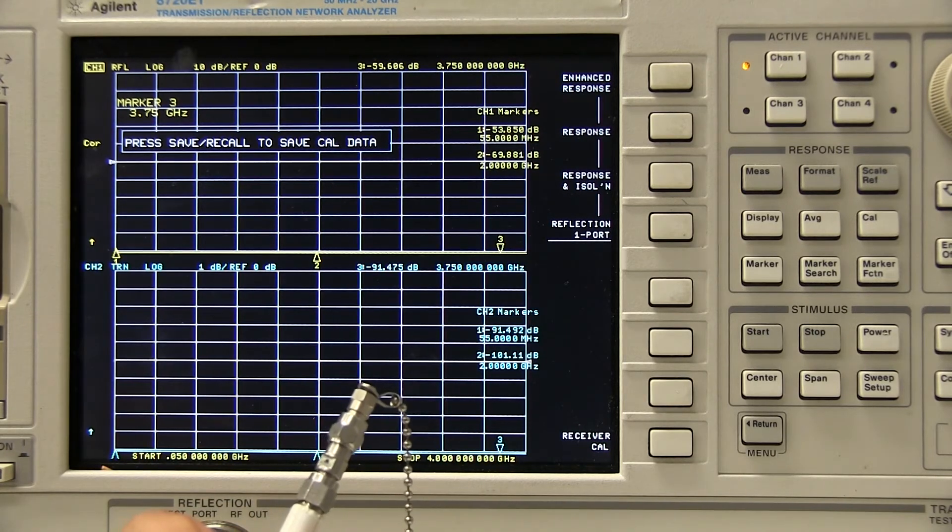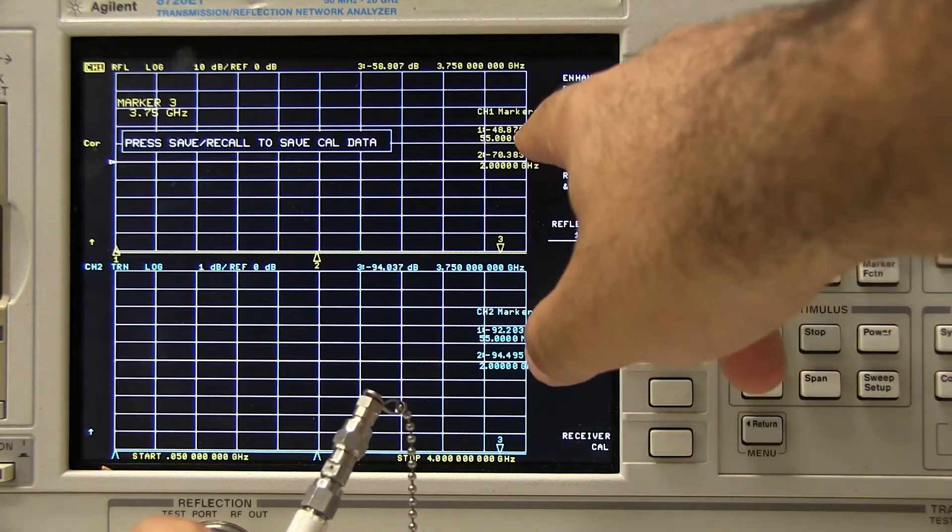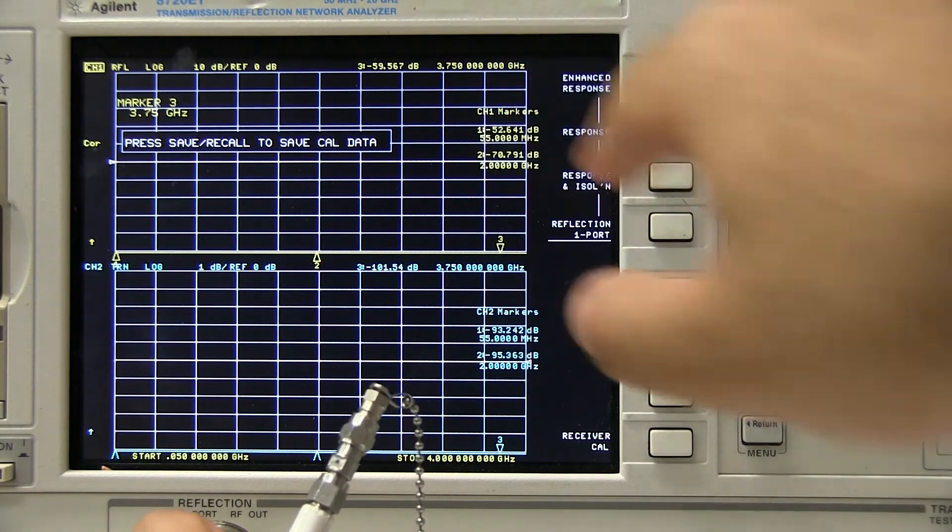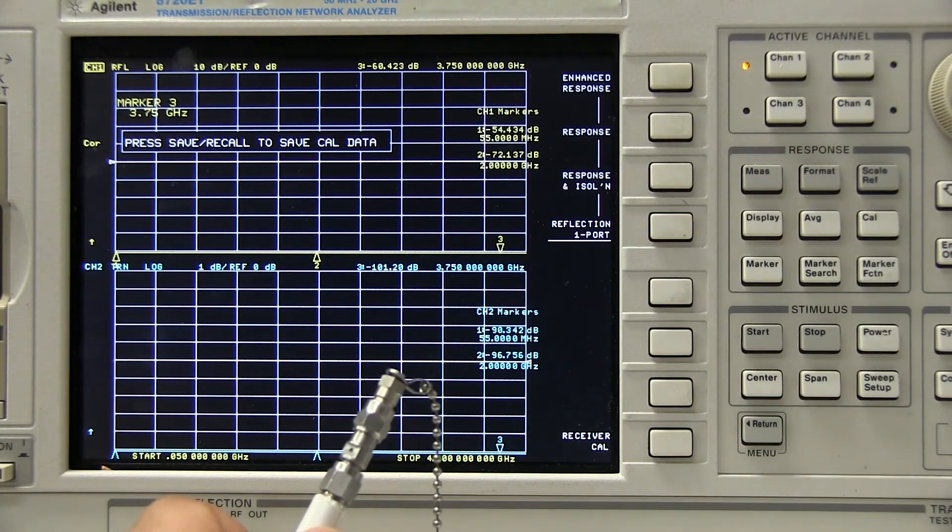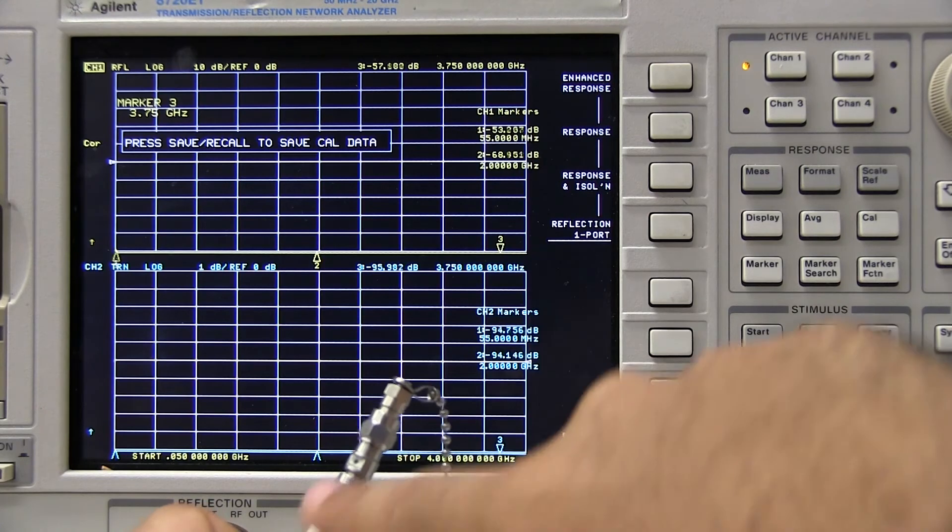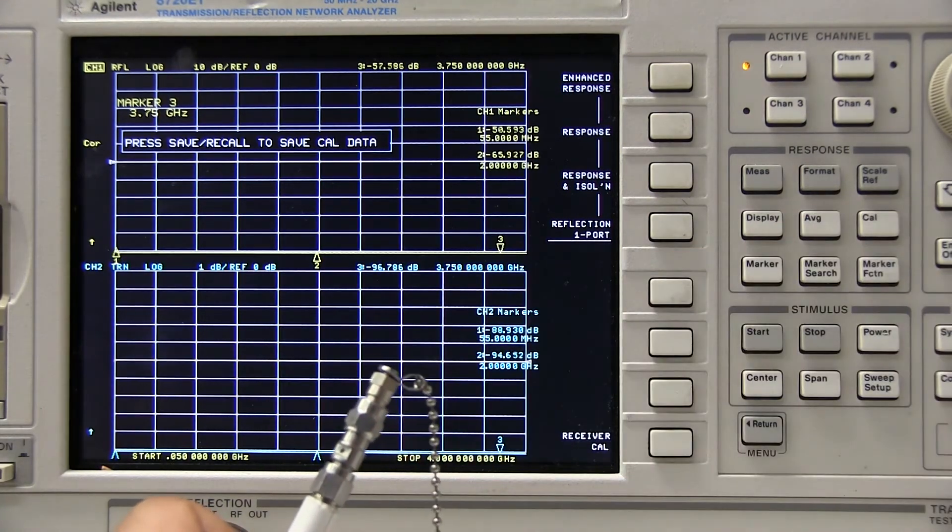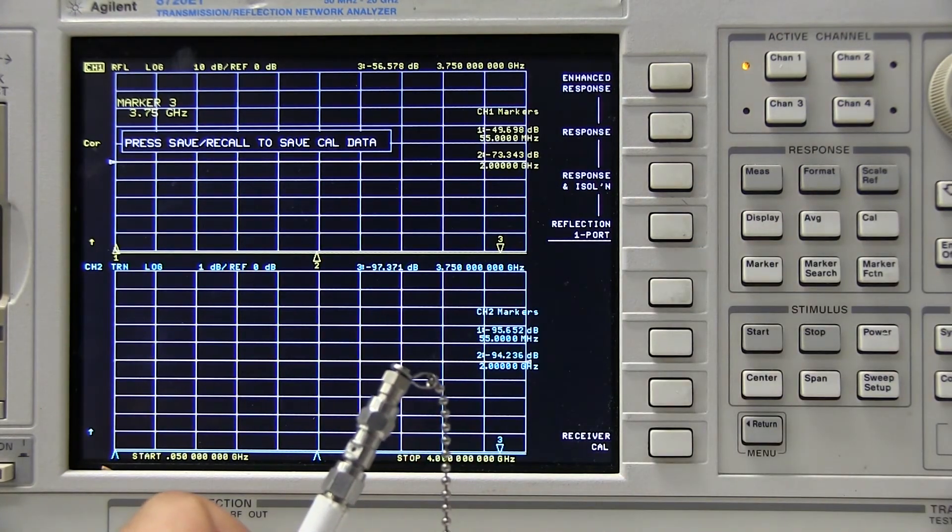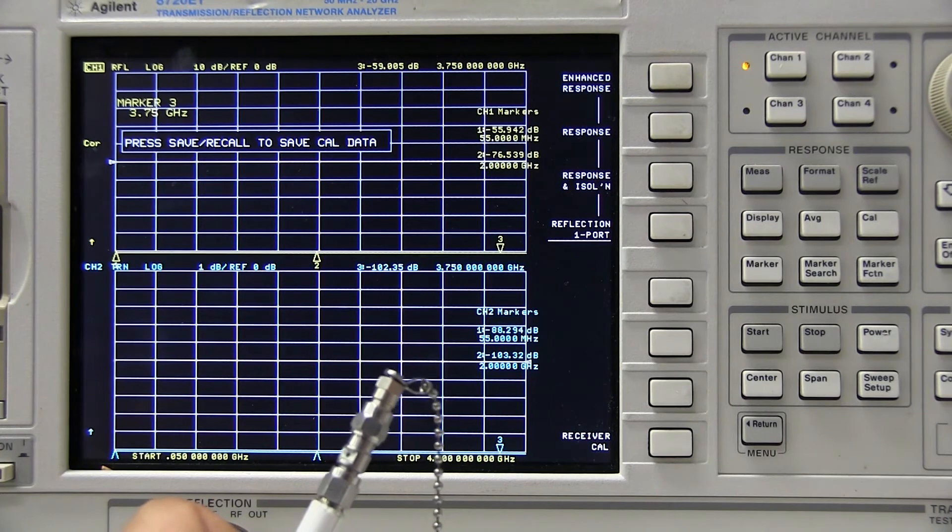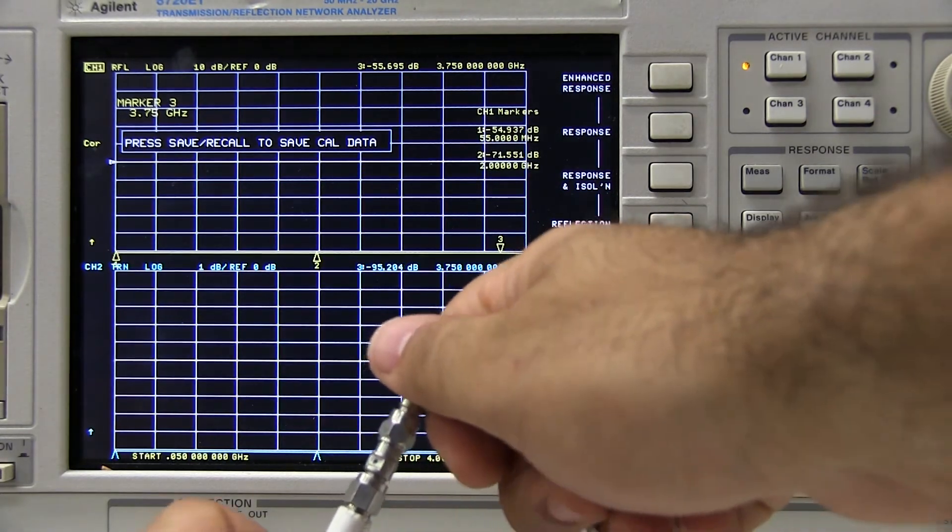Now what's happened now, we still have the 50 ohm load connected. And marker 1, marker 2, and marker 3 are all showing very, very low return losses, or very, very low reflection coefficients, or very, very good return losses. That is because all of the input stimulus is getting absorbed by the load, and it's saying there's a good 50 ohms hooked up to this input port. So you can assume that the cal on the port 1 went pretty well.